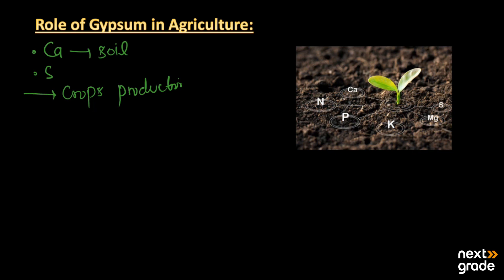In this picture you can see a small plant and the nutrients that it needs for its growth: sulfur, magnesium, potassium, phosphorus, nitrogen, and calcium. From this we have calcium and sulfur, which can be provided by the use of gypsum.